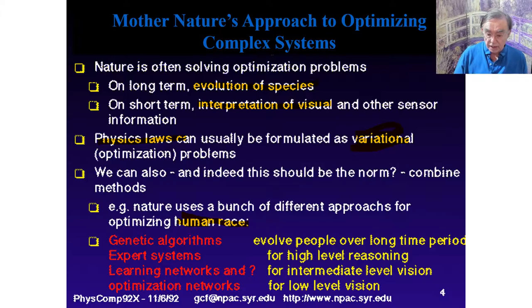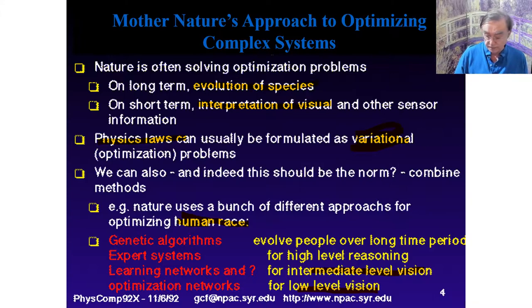We have high-level reasoning, intermediate-level vision, and low-level vision. All of these algorithms are used somewhat differently, have different trade-offs, need different methods, and nature has evolved different methods for them.